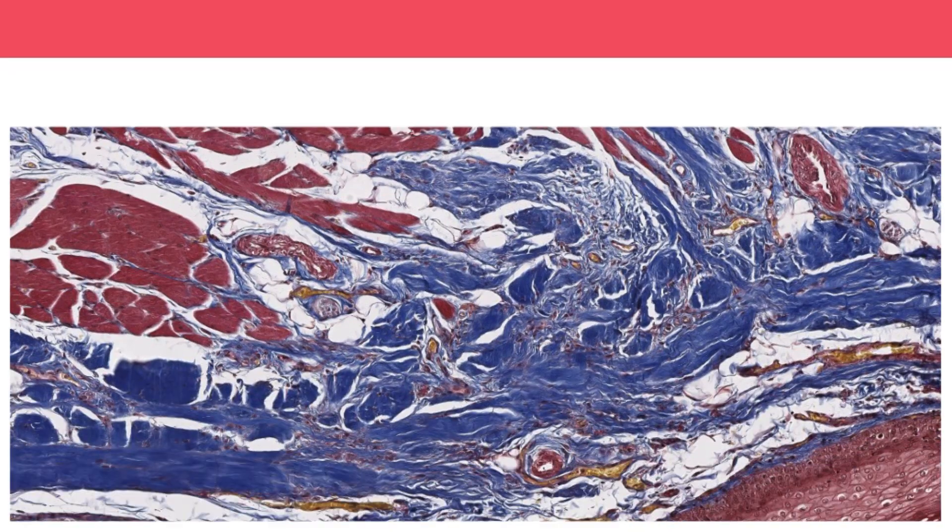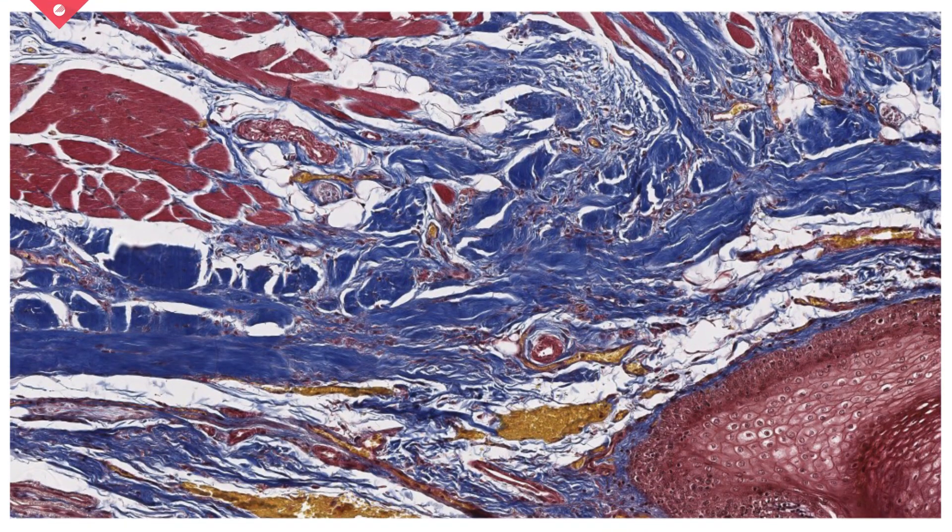As a result, nuclei will be stained in black, keratin, cytoplasm, and muscles in red, collagen in blue, and erythrocytes in yellow.